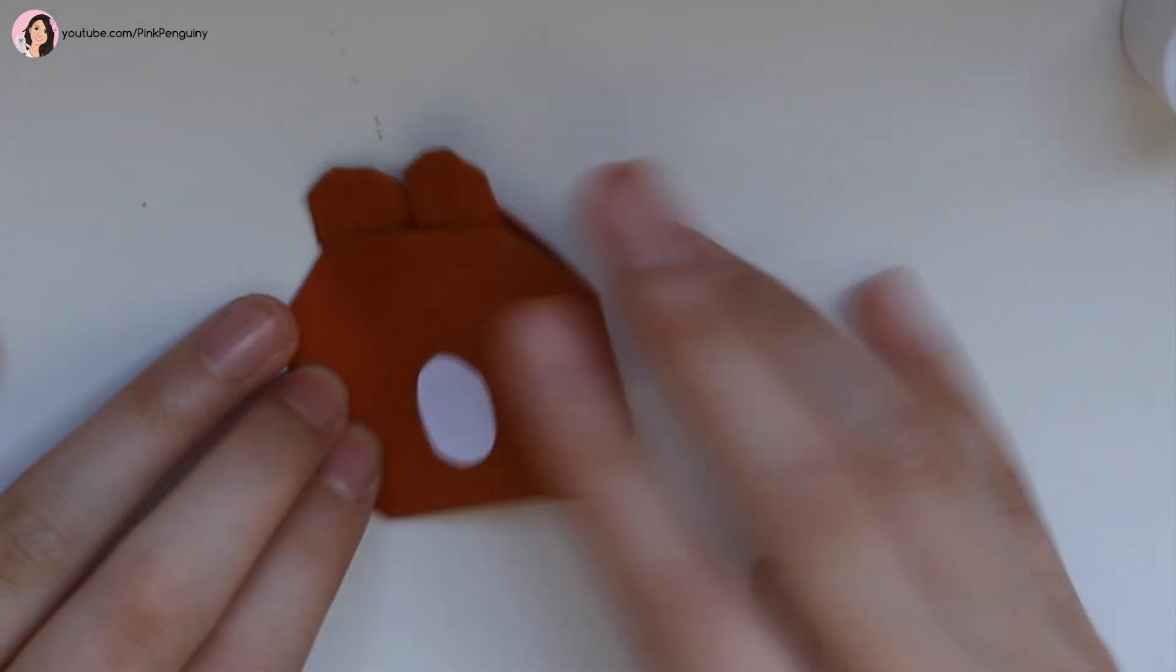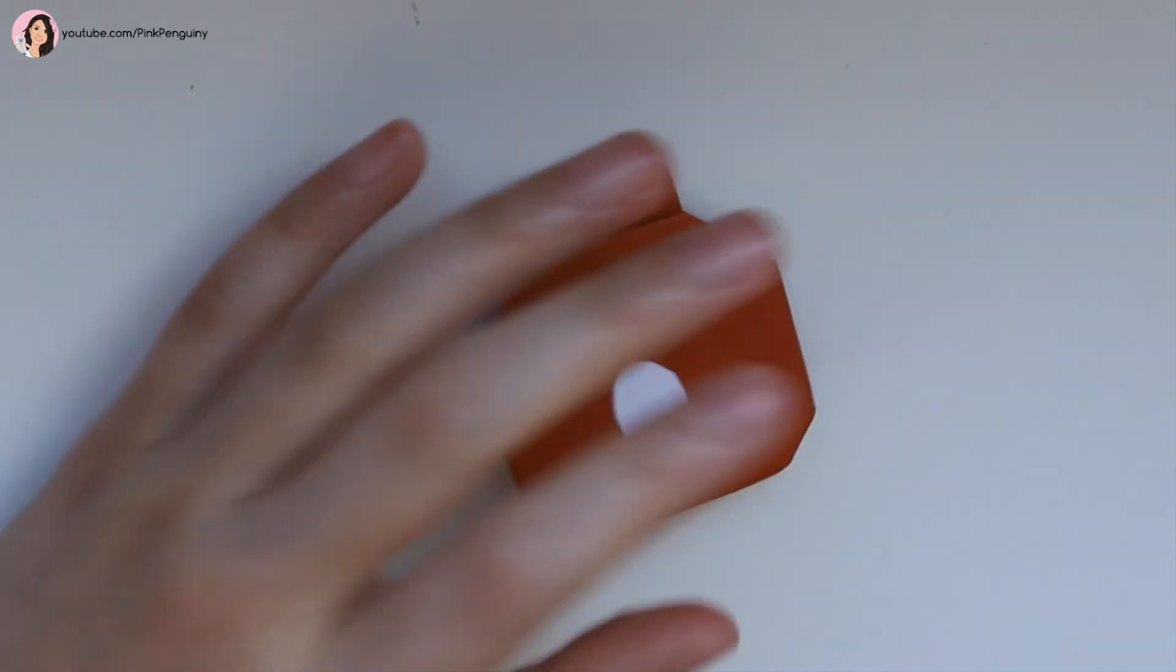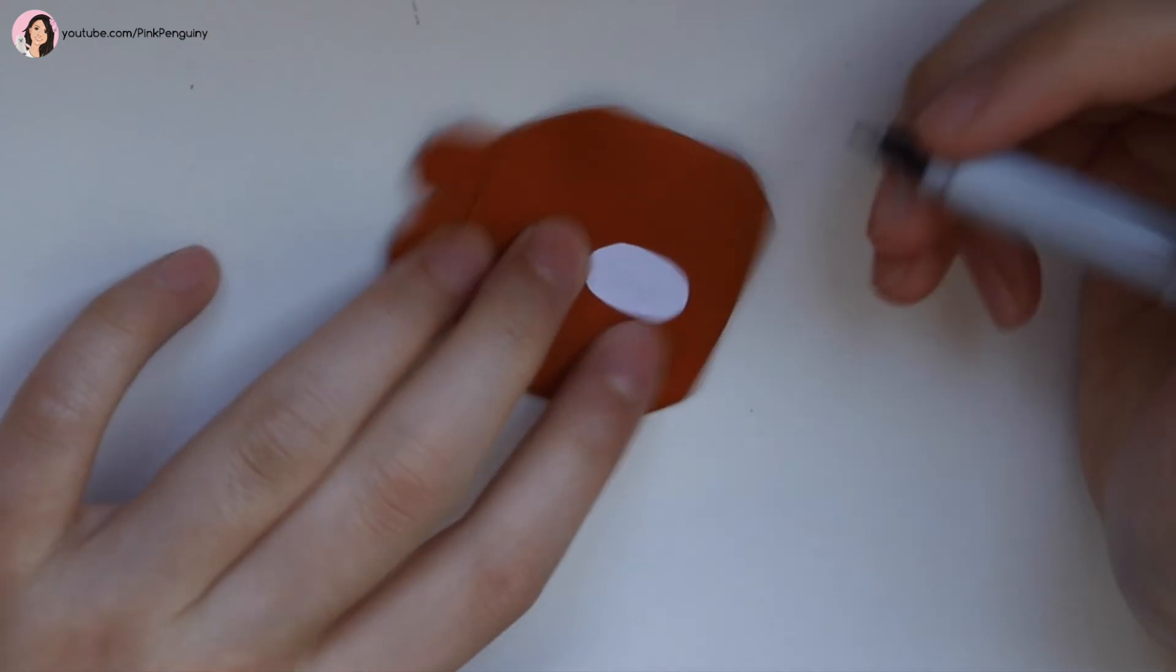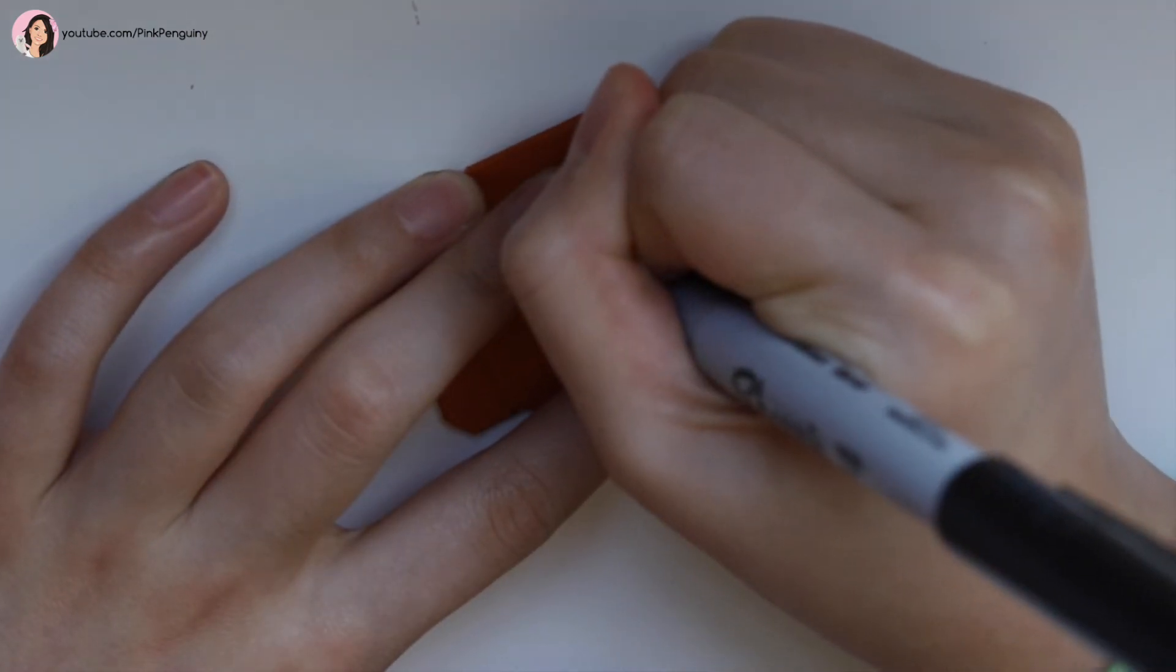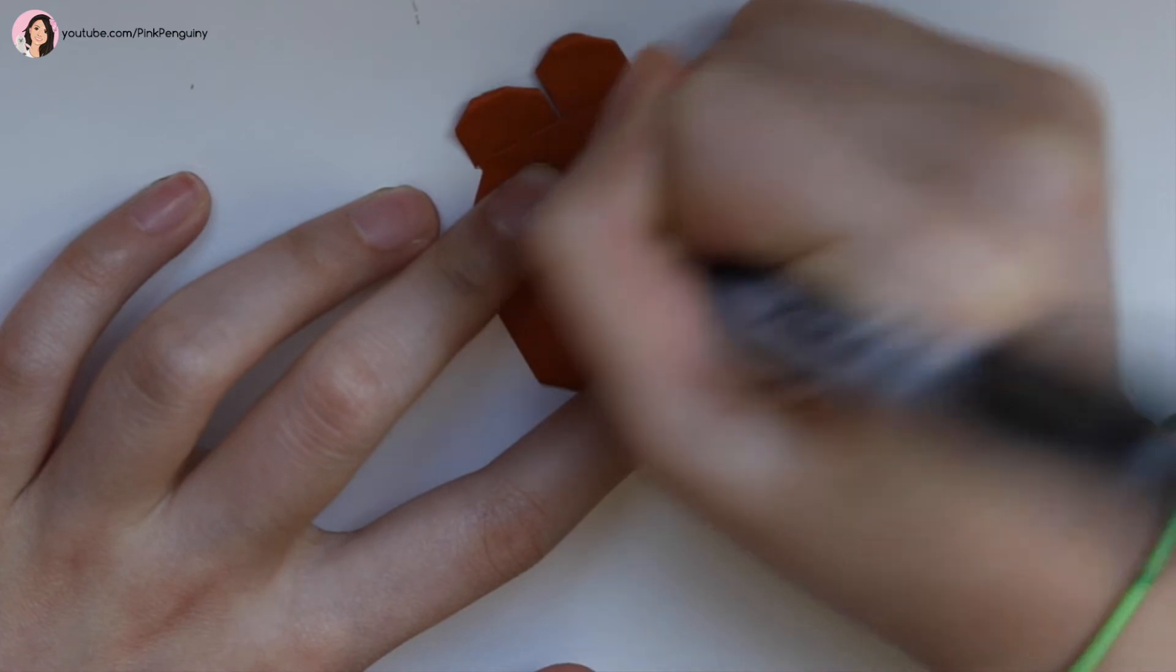And there. And now we can draw the nose and the mouth on the bear. So here's my sharpie. And the nose looks like an oval at the top. Like that. And then a line down.